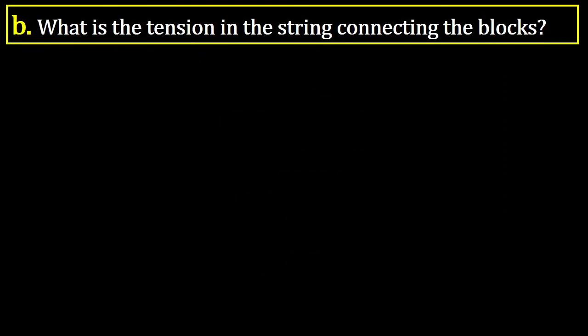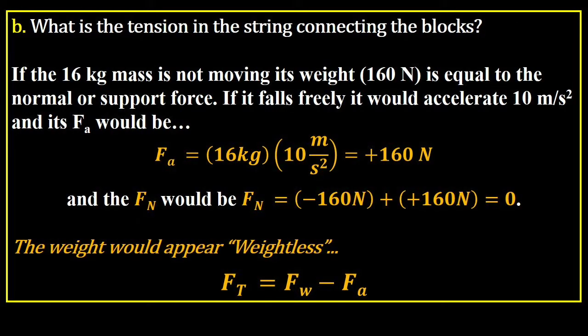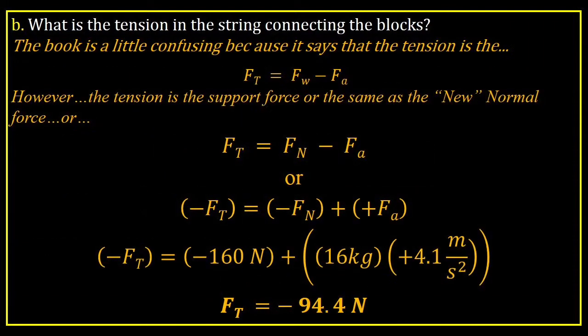What is the tension in the string connecting the blocks, the one that's just above the 16 kilogram? If the 16 kilogram mass is not moving, its weight is 160, which is equal to the normal or support force. If it falls freely, it would accelerate 10 meters per second squared, and its FA would be 160. And the FN would be zero, would have no support, it would be the support force. The weight would appear weightless. Now, the book says FT equals FW minus FA, but it's really, I think, it would be a correction of FN. FN is negative, and you would subtract that positive FA from FN to get a new FN, and then subtract that FN, or add that FN to the positive weight.